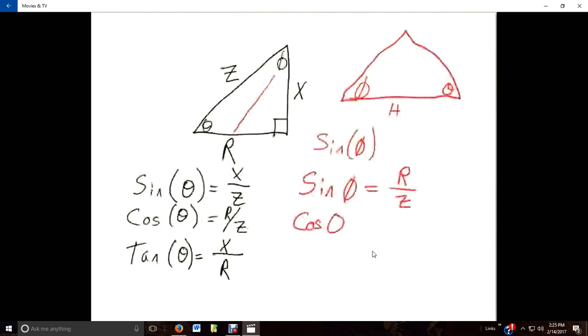All right. Cosine of phi is going to be, let's see, our adjacent is our x, and our hypotenuse is our z. The tangent of phi is going to be, the opposite is r, the adjacent is x.